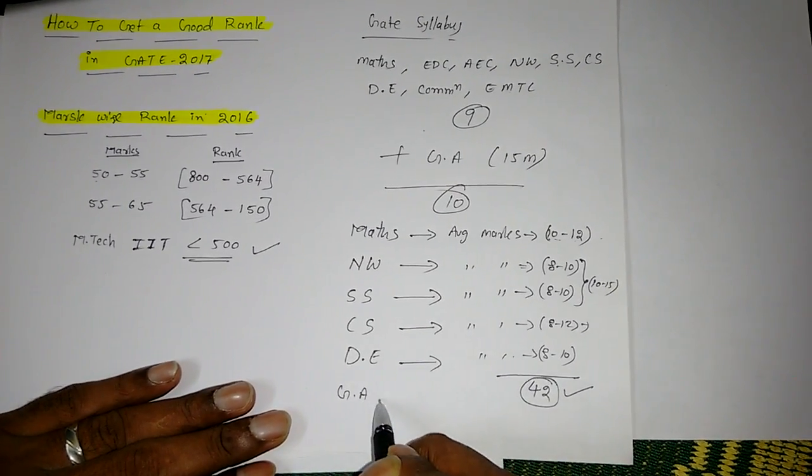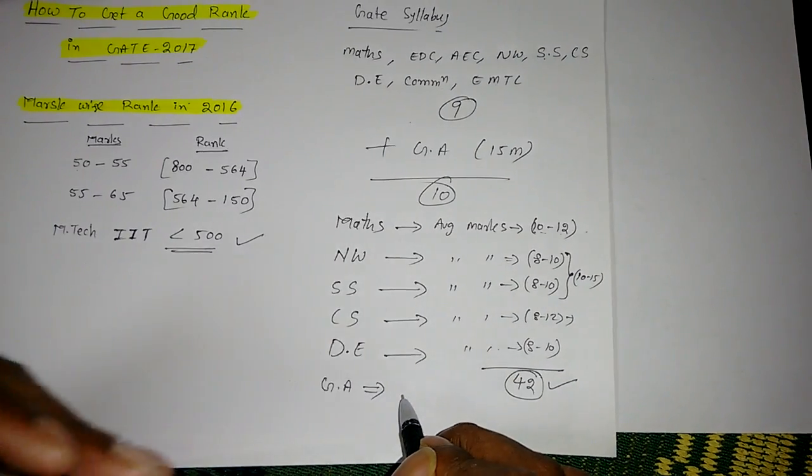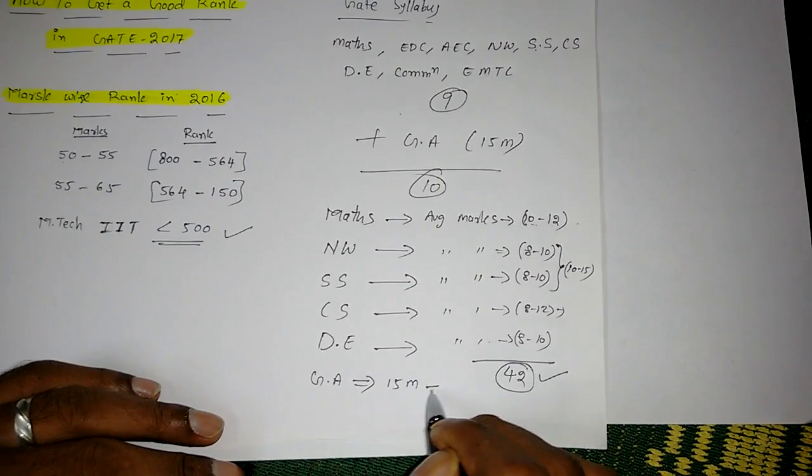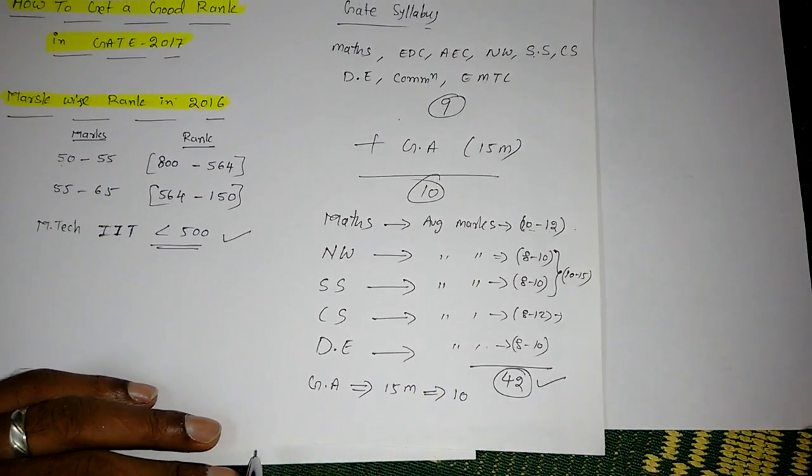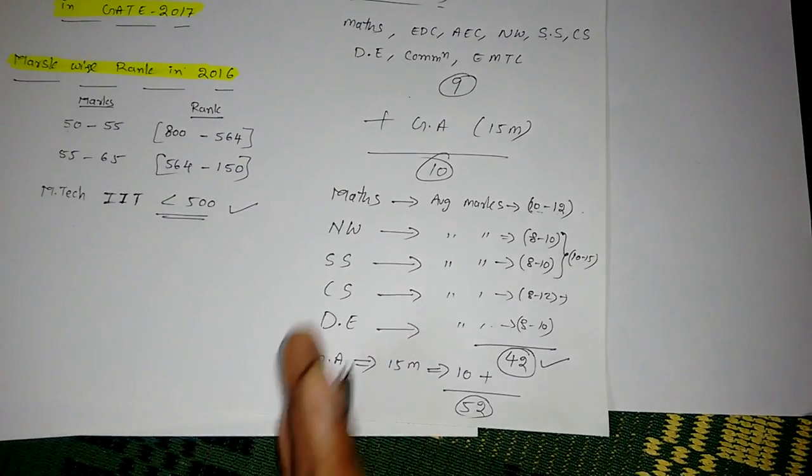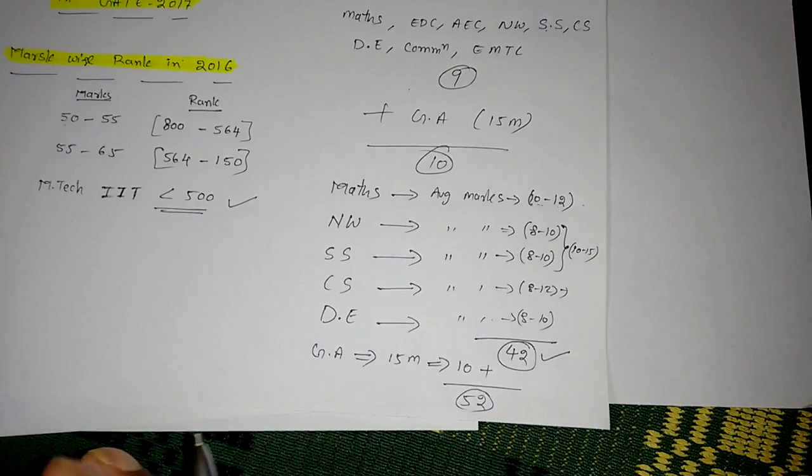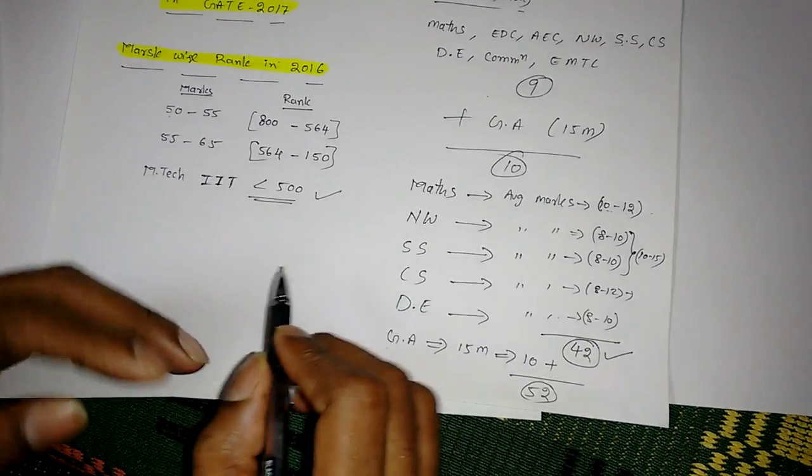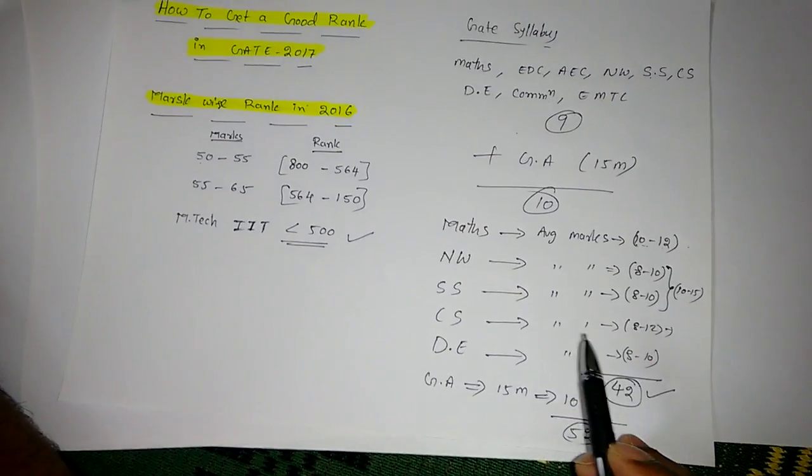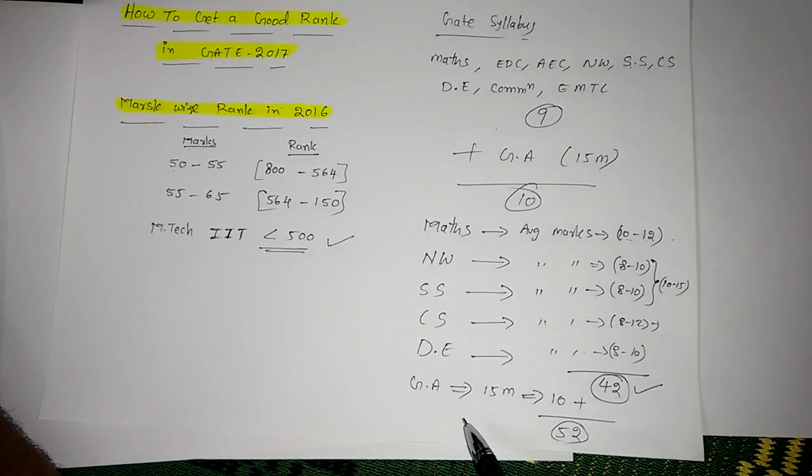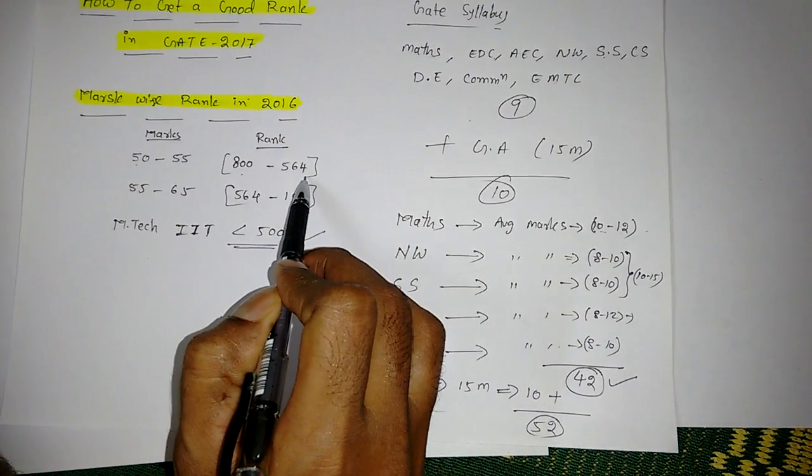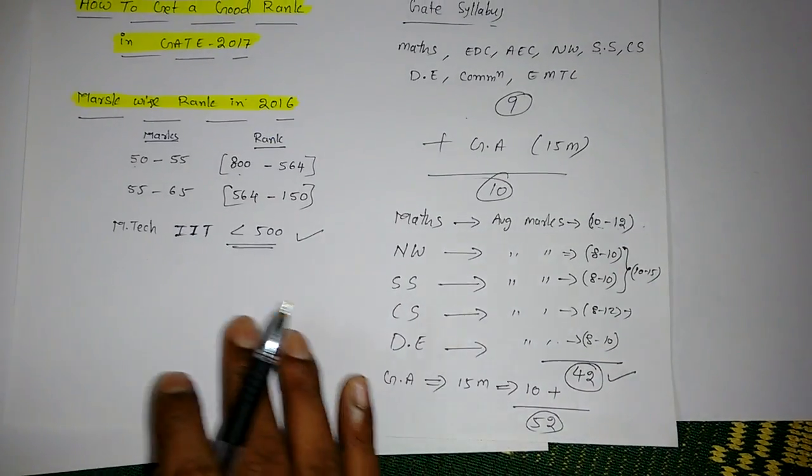If you study or practice General Aptitude, that is English or Quantitative, that's for 15 marks. From this 15 marks if you score at least 10, so 42 plus 10 you will get around 52 marks. If you carefully plan these three months - October, November, December, and January - up to December if you plan these six subjects, you can score easily between 800 to 564 rank.